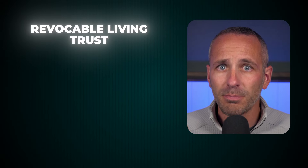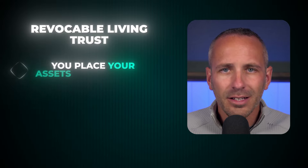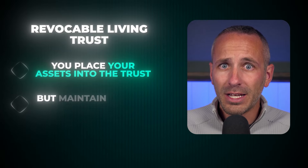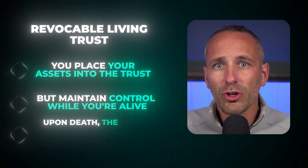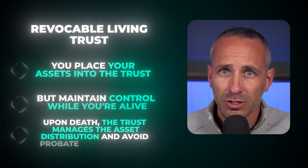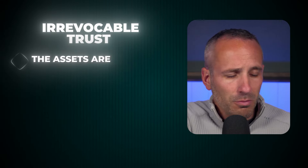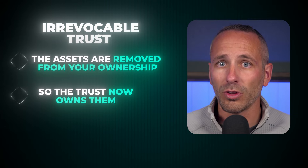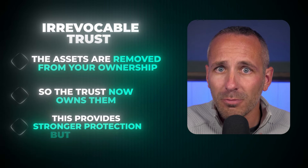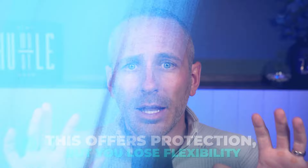With a revocable living trust, you place your assets into a trust while you maintain control of those assets while you're alive. Then upon death, the trust manages the asset distribution and avoids probate for your heirs. With an irrevocable trust, this removes the assets from your ownership — the trust now owns it, not you personally — and it provides stronger protection, but you'll have less flexibility with those assets.